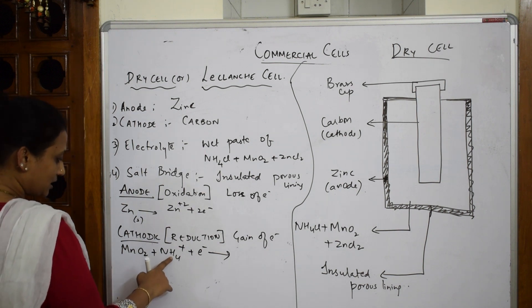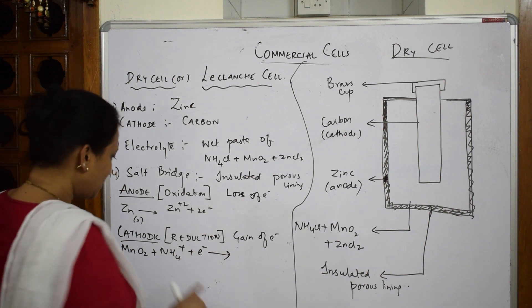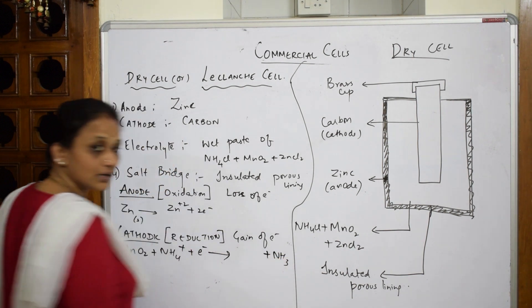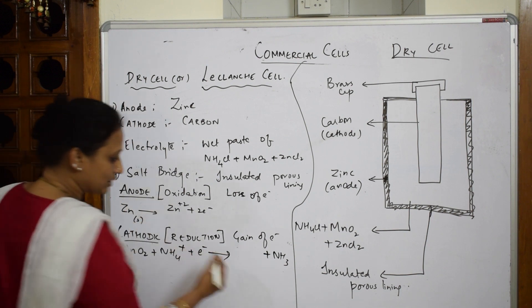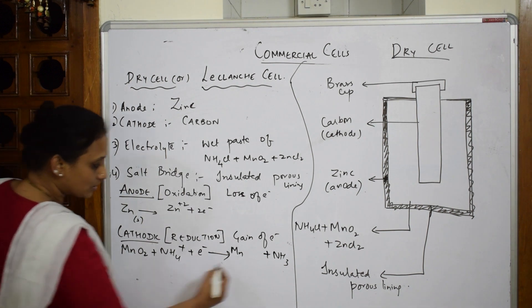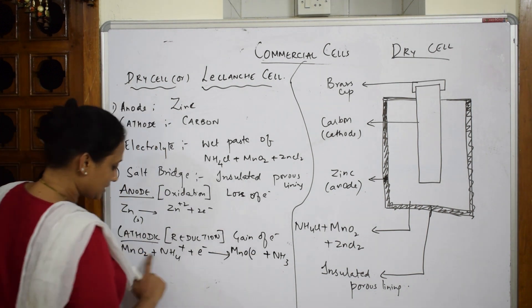Observe carefully what's happening. After accepting the electron, NH4⁺ gets converted to NH3. What is left now? Mn, double O's are there, and one H. How will you write the complex? This is manganese. Try to write one O outside, one more O inside.